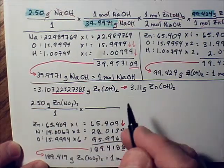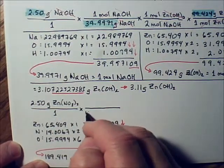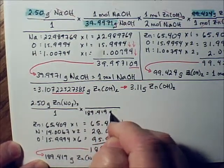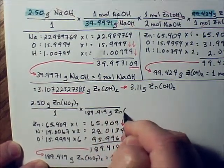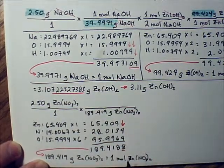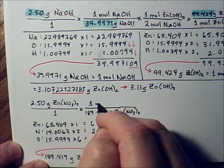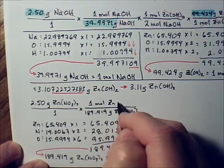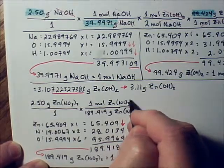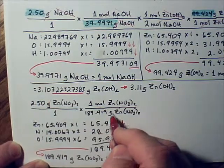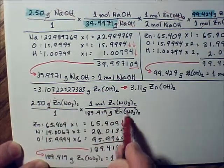And from this we build our conversion unit. Cancel the units of measurement here. Grams can go away, and the species of zinc nitrate can go away here.